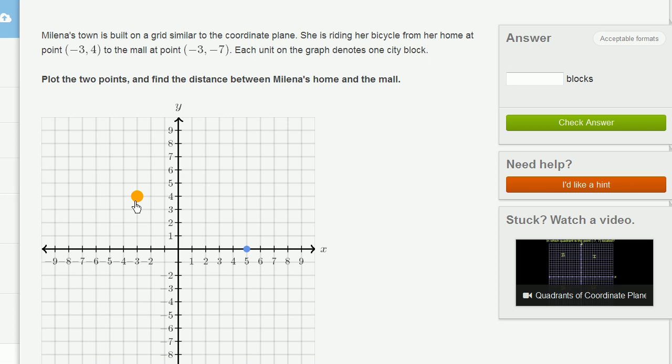Now let's figure out that's where her home is. Now let's figure out where the mall is. It's at the point negative 3, comma negative 7. So negative 3. We went negative 3 along the horizontal direction. And then negative 7 along the vertical direction. So we get to negative 3, negative 7 right over there.